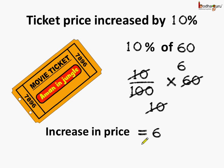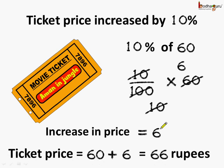And what is the new price of the ticket? It would be the old price plus the increase in price. So the new price is equal to 60, that is the old price, plus the increase which is 6 rupees. So the new price is equal to 66 rupees.